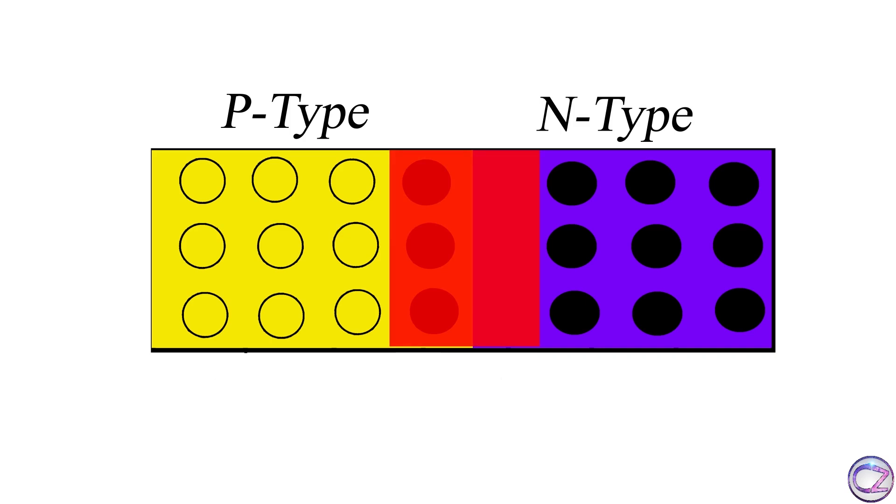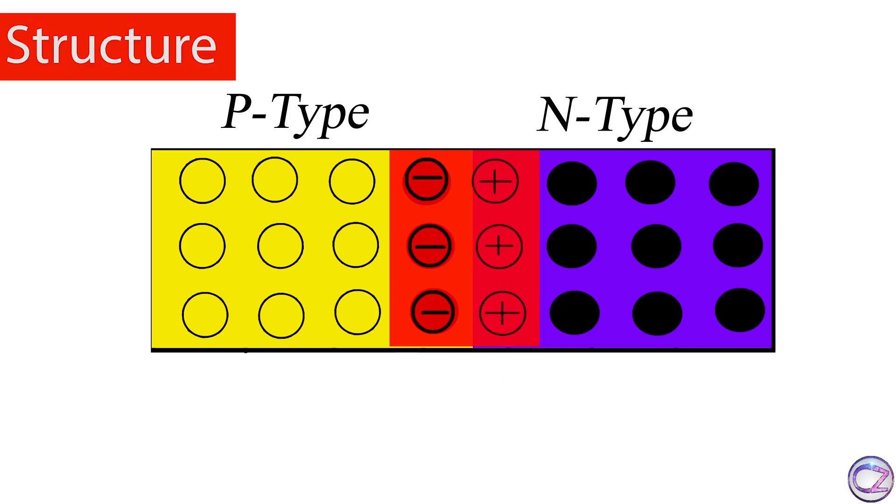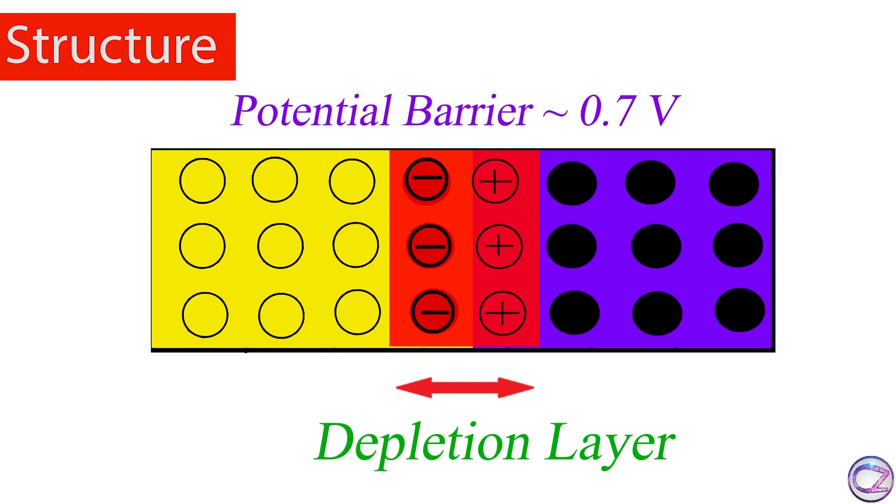As a result, the P-side border is slightly negatively charged and the N-side border is slightly positively charged. Now you can see the depletion layer is created. This layer builds a potential barrier for electron flow.